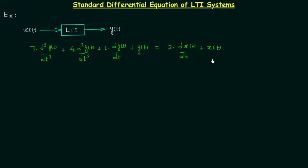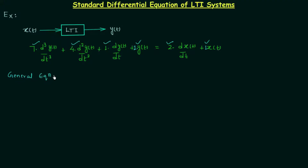Here you can see we have coefficients: seven, four, one, and one on the left side, and two and one on the right side — and all the coefficients are constant. So in our general equation we need to have all the coefficients as constant. This is one important point. Now we will move to the general equation.